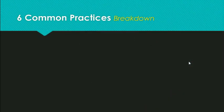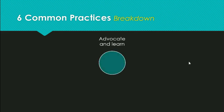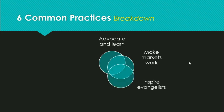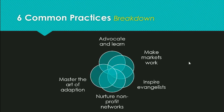We will now take a closer look at each of the practices in order to better understand how they are able to make organizations more impactful. Please keep in mind how you personally would implement each of these practices in your own organization, and note the ways that each practice interacts with each other to produce impactful results. These six practices are advocate and serve, make markets work, inspire evangelists, nurture nonprofit networks, master the art of adaptation, and share leadership.